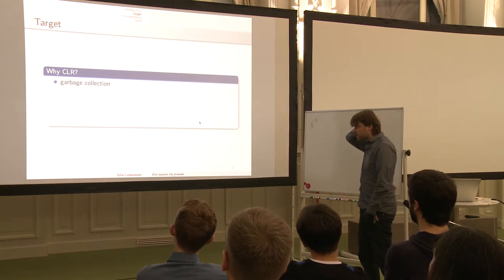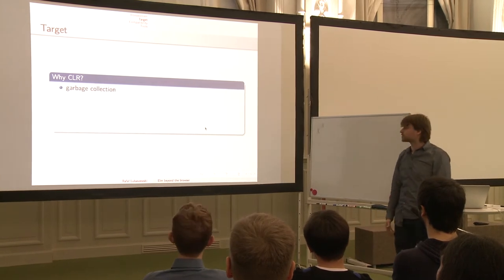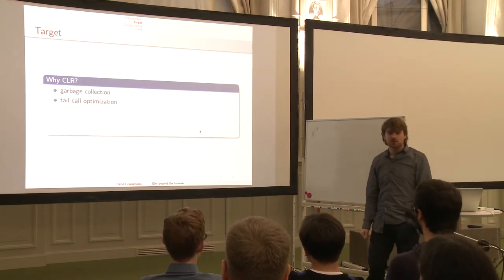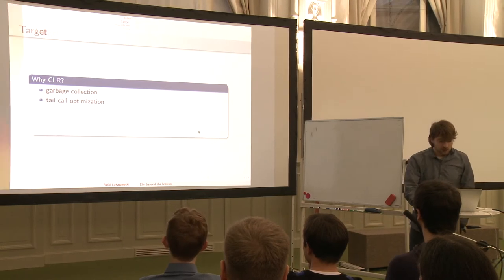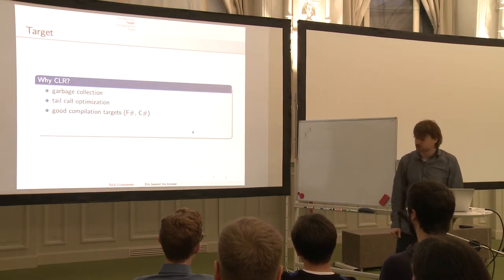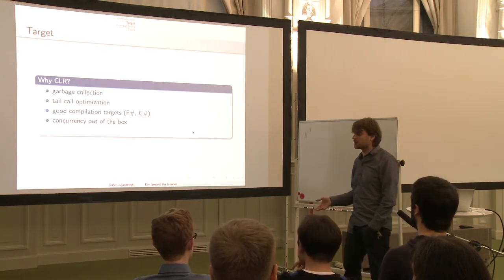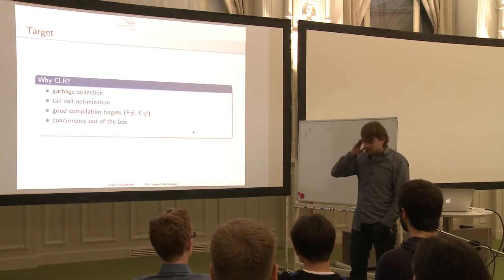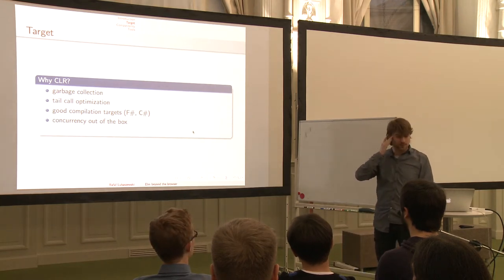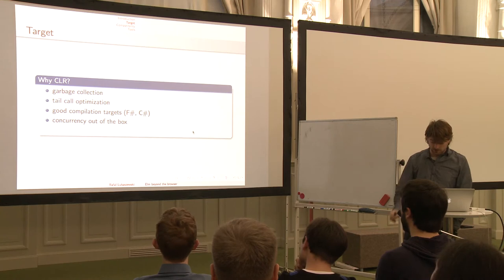With CLR we have garbage collection from the start, and it's a good thing — the same as with JavaScript. We don't have to maintain garbage collection. We don't have to worry about tail-call optimizations because it's already there. It has a good set of compilation targets. It's probably going to be C# or F#. Both C# and F# have really nice tools for concurrency out of the box. I work with them every day and I love them.